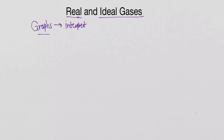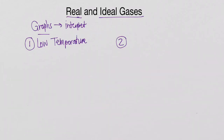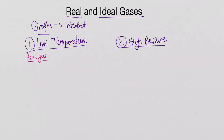Let's look at the two cases where we experience the most deviations between real and ideal gases. The first case is when we have low temperature, and the second case is when we have high pressure. In a case of very low temperature, what's going to happen with a real gas is that as temperature decreases, a gas will condense into a liquid — it will liquefy. In an ideal gas, we assume that never happens.